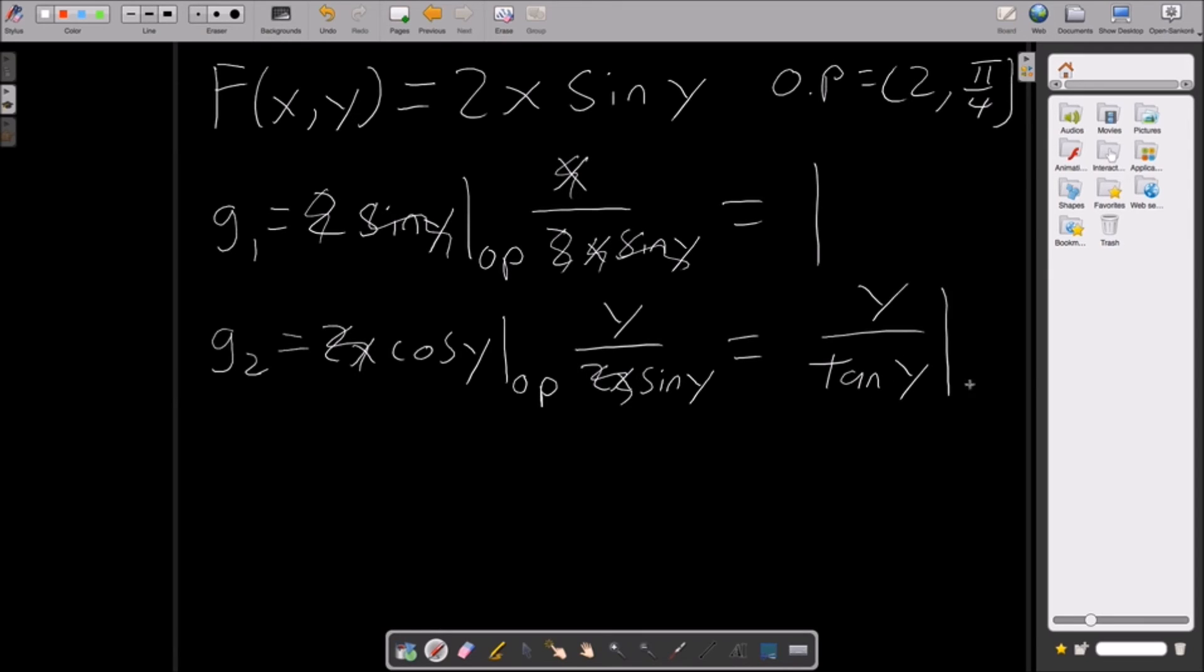Alright. So these 2x's will cancel out. So all we're left with is y over tangent y. And if we plug in some numbers, that's going to give us pi fourths over tangent of pi fourths. So how do we get this pi over 4? We just plugged in the original operating point, which is 2 is the x and the pi fourths is the y value. Alright. That makes sense. So now I have this. And tan of pi fourths is 1. It's just 1, right? Yeah. And now we have solved for g1 and g2.